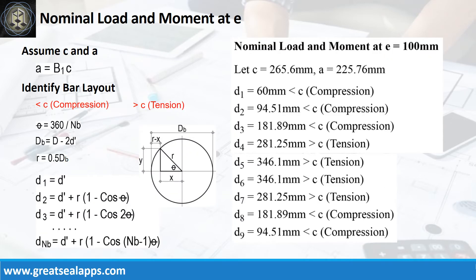To get the nominal load and moment at eccentricity equals 100 mm, let neutral axis C equal 265.6 mm and height of stress block A equal 225.76 mm. Given a column diameter of 415 mm and steel covering of 60 mm, follow the given computations to get the distances of each bar from the edge of the column and force type relative to neutral axis.